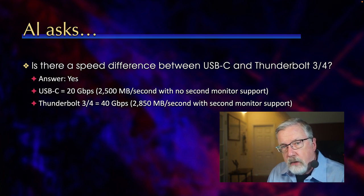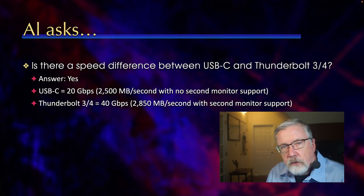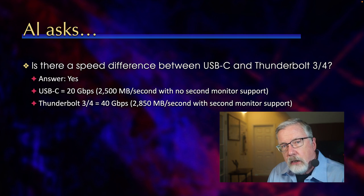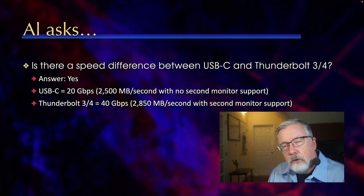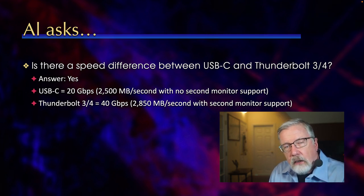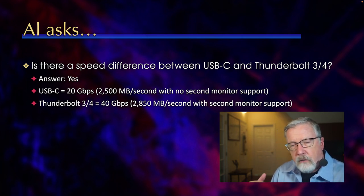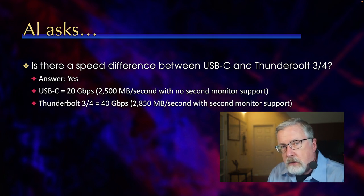That's almost double the speed. However, USB-C does not have a reserved channel for a computer monitor, which means it can transfer data at up to about 2,500 megabytes per second. Thunderbolt can take data up to 2,800 megabytes a second, and that includes a separate channel for a display, so you can drive high-speed storage and a 4K display easily off Thunderbolt. You can't with USB-C.